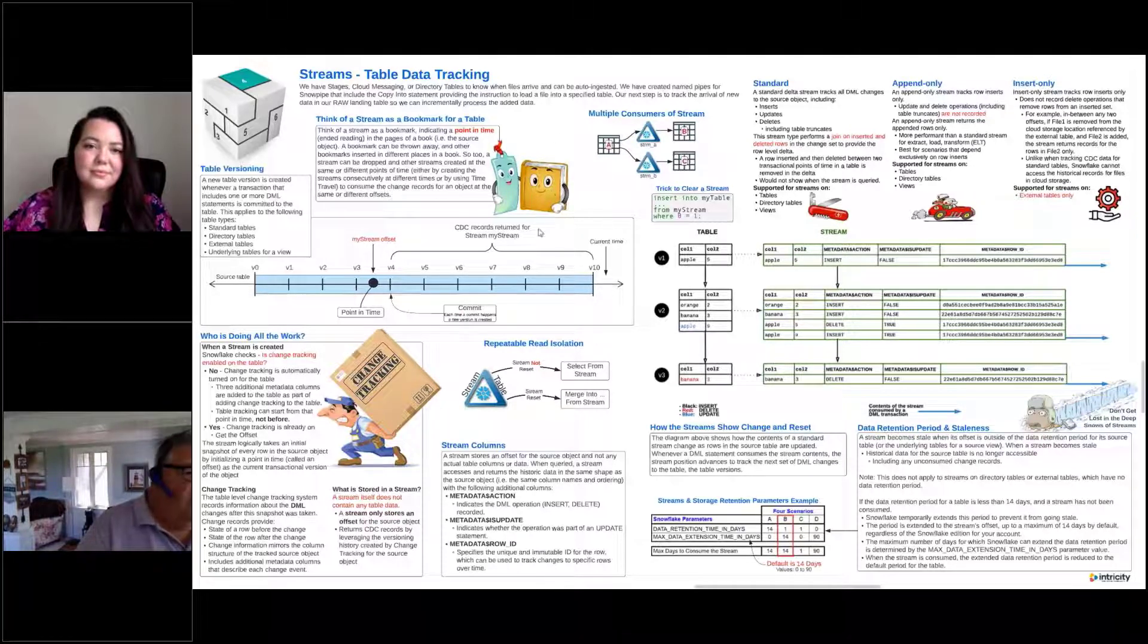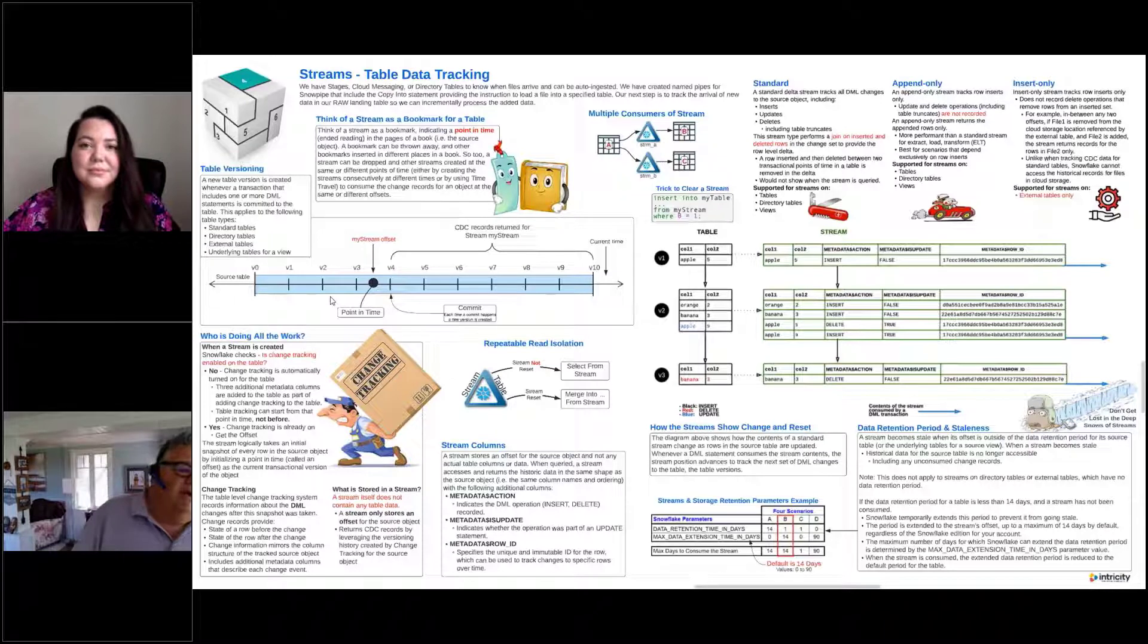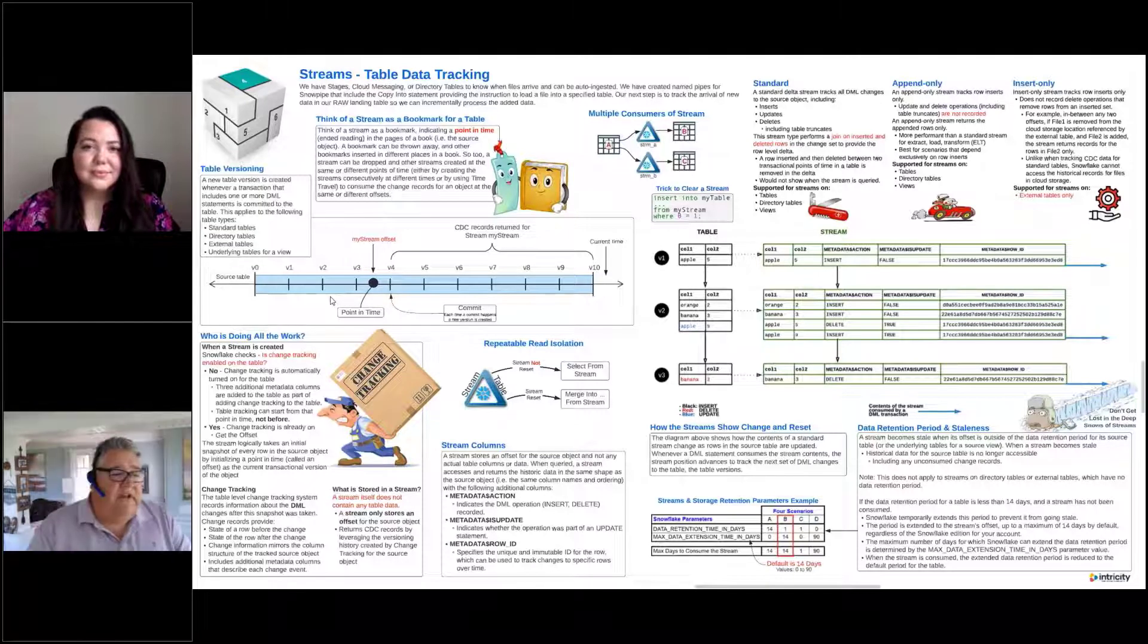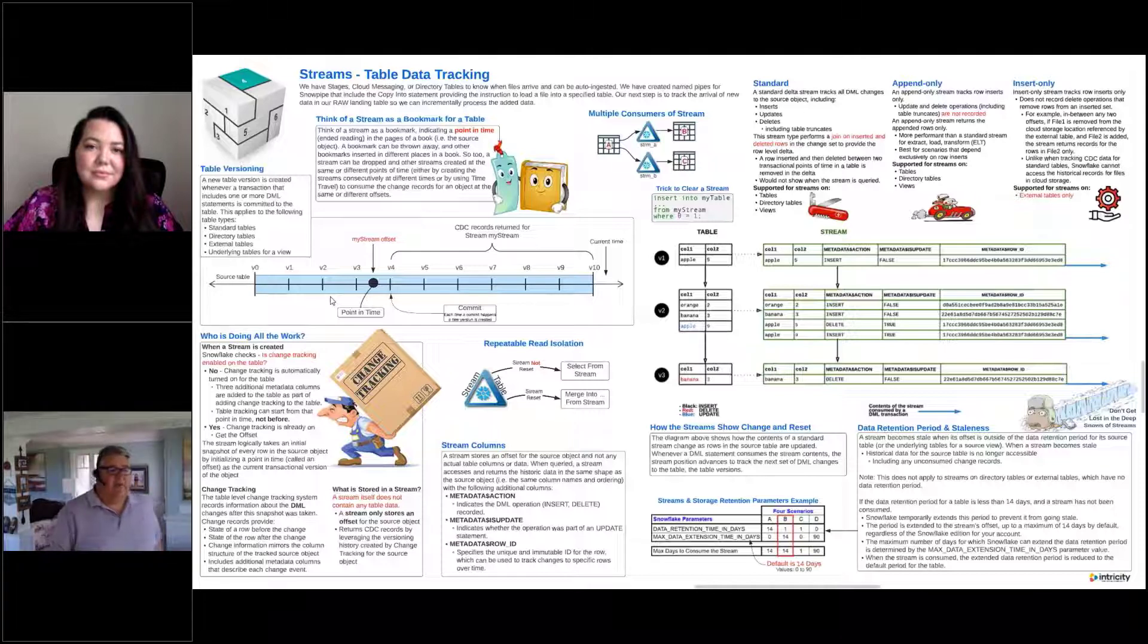So what we've got here in the diagram, let's say we've got a table. You can see we've got version one, version two, version three. This represents a table where we're inserting records, we're updating data records. In Snowflake, since the micro partitions are immutable, an update is really an expiration of the record in one micro partition and inserting another record into a new micro partition.